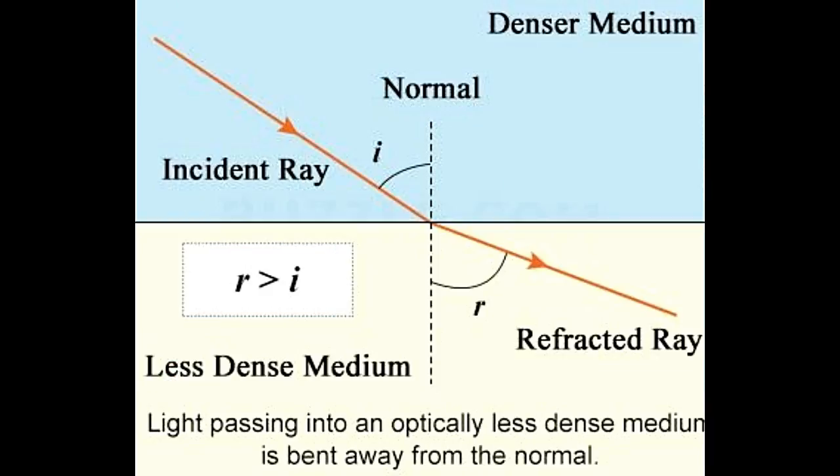As demonstrated by the diagram presented below, when entering a rarer medium from a denser medium, light speeds up and bends away from the normal. Here, the angle of refraction is greater than the angle of incidence, R greater than I.